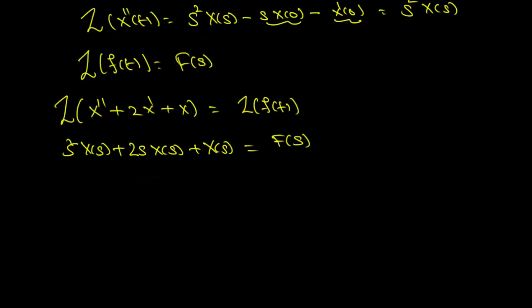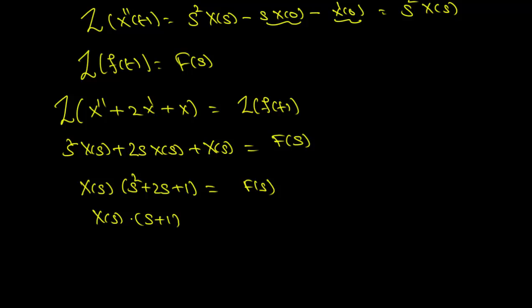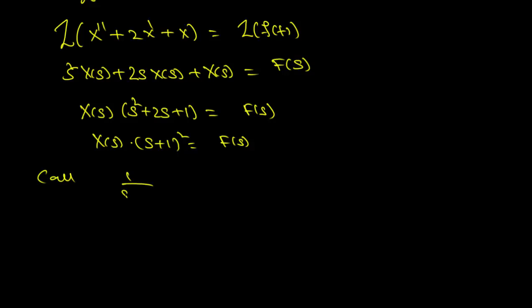Taking X of s out on the left-hand side, we have X of s times s squared plus 2s plus 1 equals F of s, which means X of s times (s plus 1) squared equals F of s. We define capital G of s as 1 over (s plus 1) squared, so X of s equals G of s times F of s.